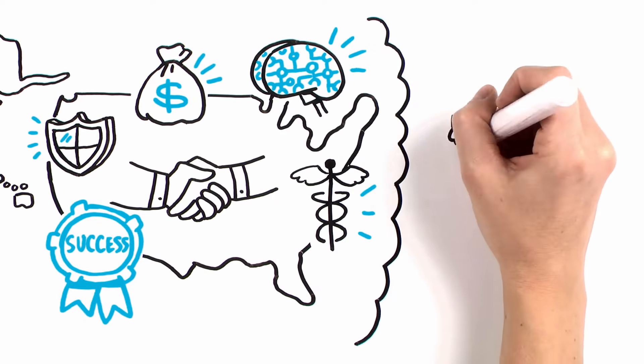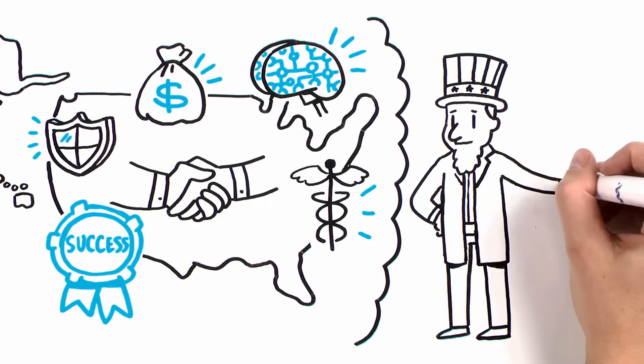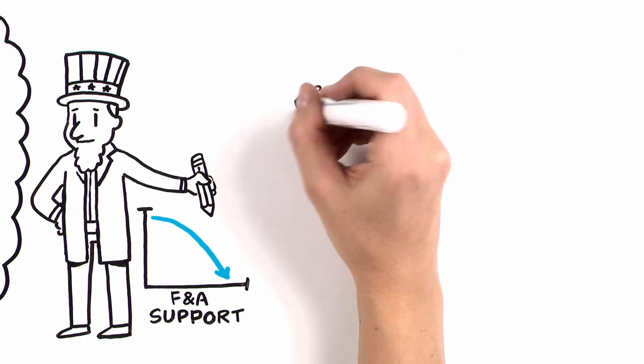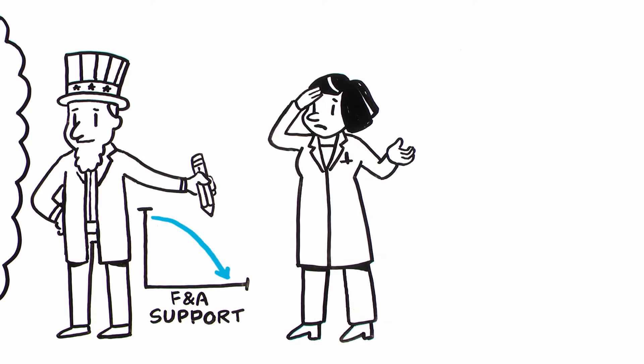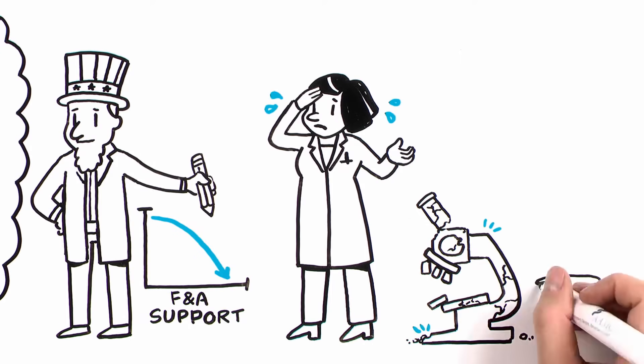Despite the long-standing success of this partnership, some in Washington want to significantly reduce the federal government's role in funding F&A cost reimbursement. Further efforts to reduce or cap F&A cost reimbursement would directly hurt faculty and trainees and significantly harm institutions' ability to advance important discoveries.